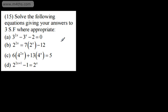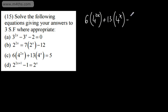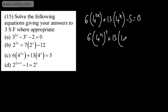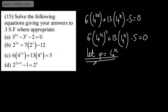Let's look at the next one. What we've got is 6 lots of 4 to the 2x, so we've got a coefficient on the term in 2x, plus 13 lots of 4 to the x minus 5 is equal to 0. So we've got 6 lots of 4 to the x, which we need to square, plus 13 lots of 4 to the x to the first power, minus 5 equals 0. Let p be equal to 4 to the x. That gives us 6p squared plus 13p minus 5 is equal to 0.